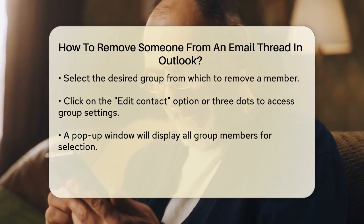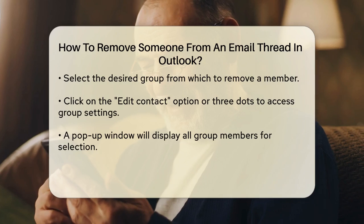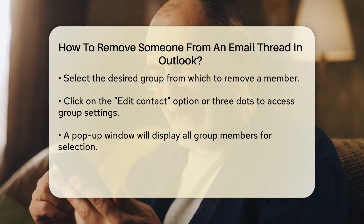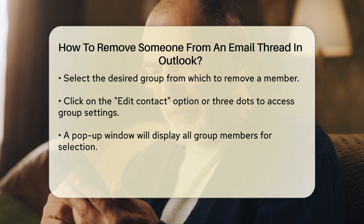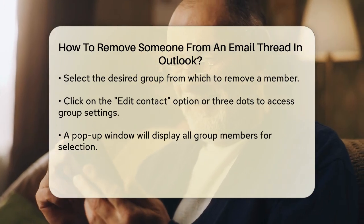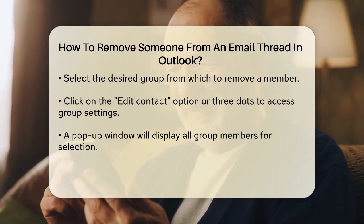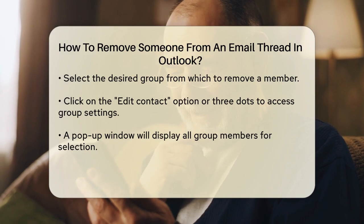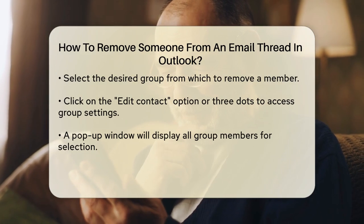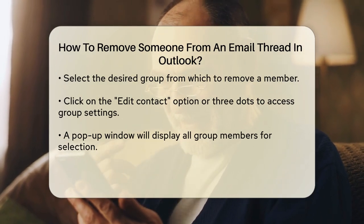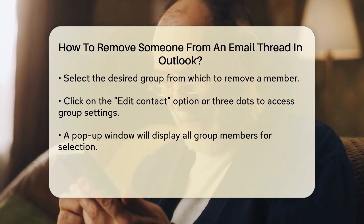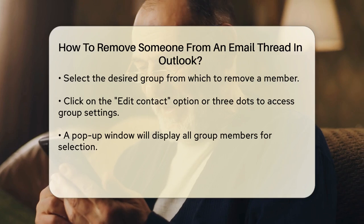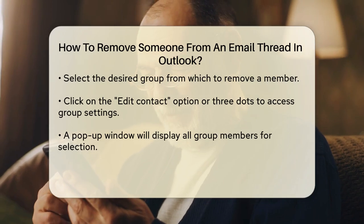Once you've selected the group, you'll see an option to edit it. Click on the three dots or the Edit Contact option, depending on your Outlook version. This will open a pop-up window showing all the members of the group. Here, you can select the member you want to remove and click on the Remove Member option, usually found in the ribbon at the top.